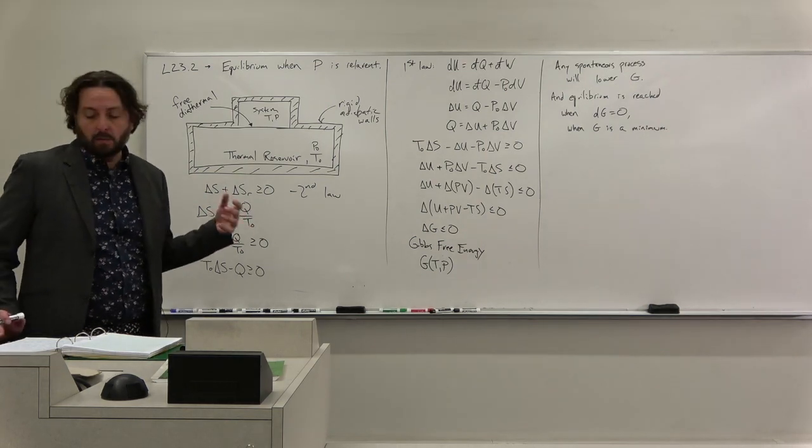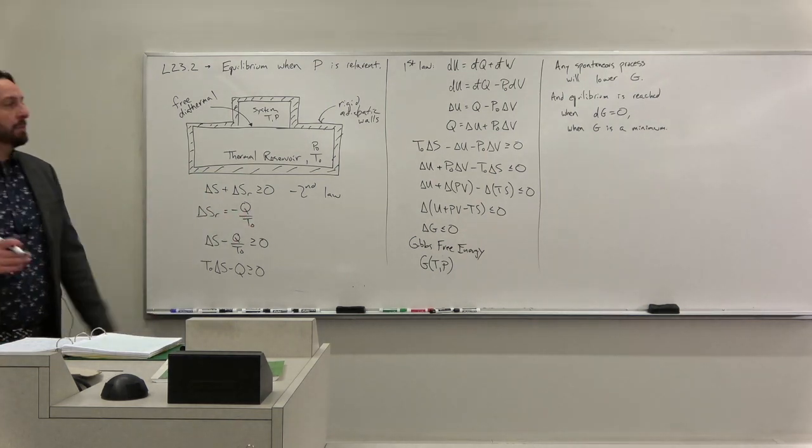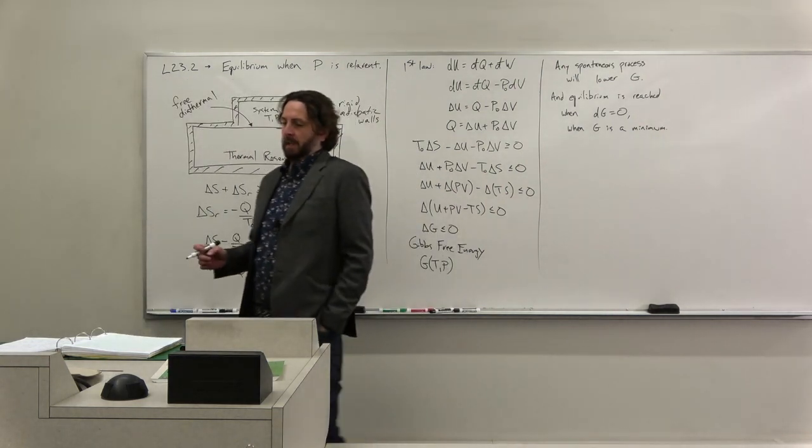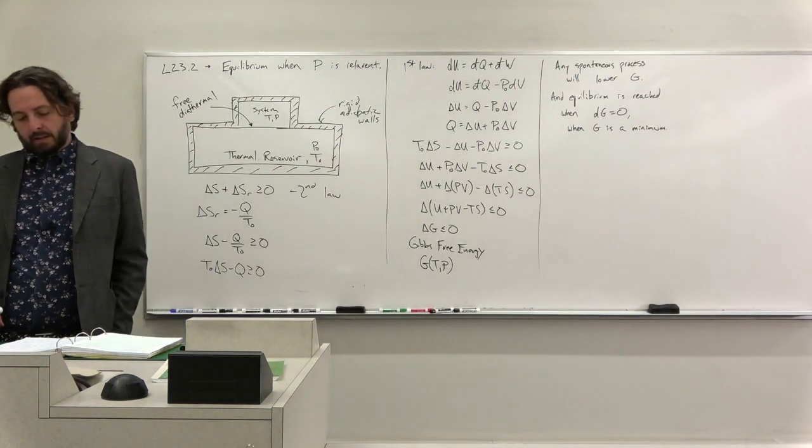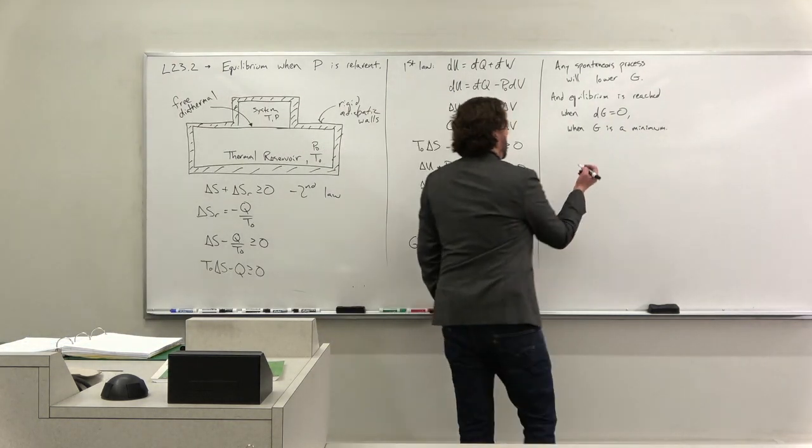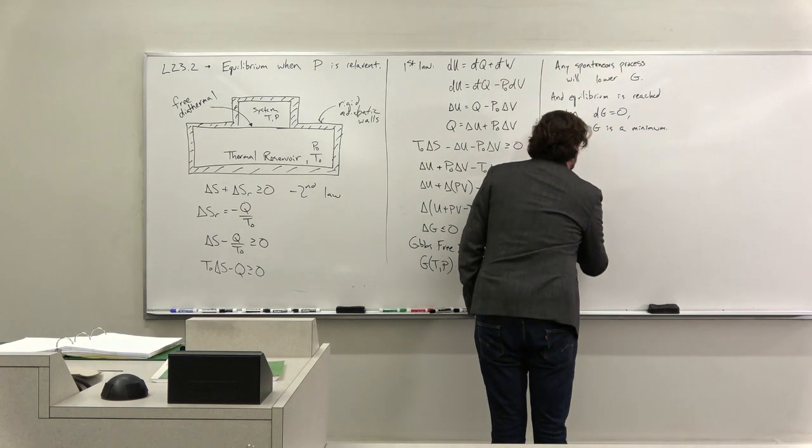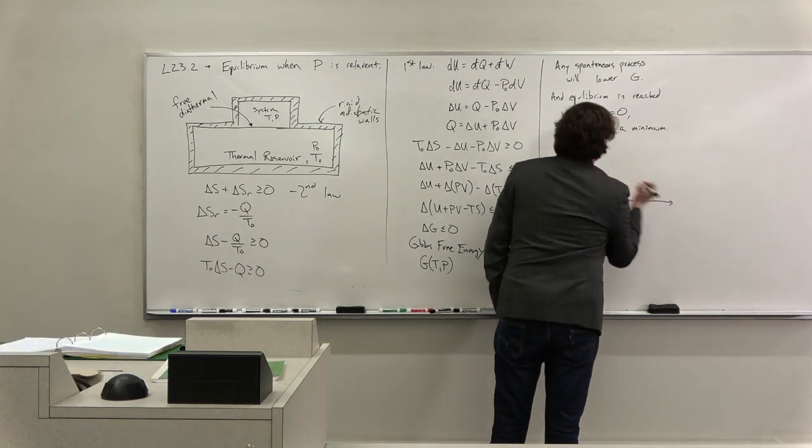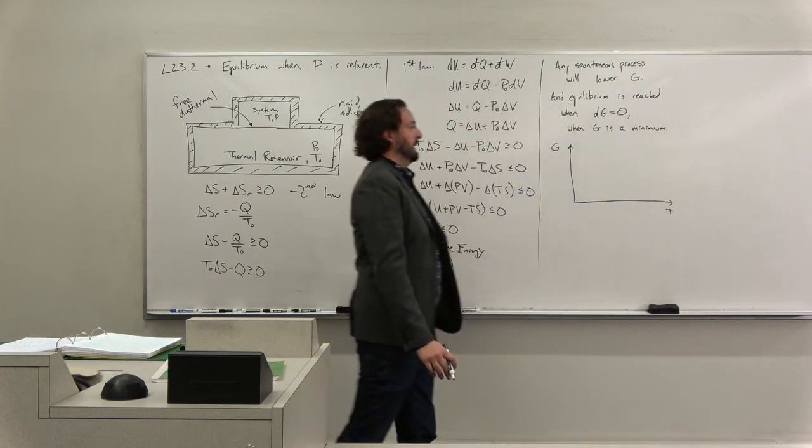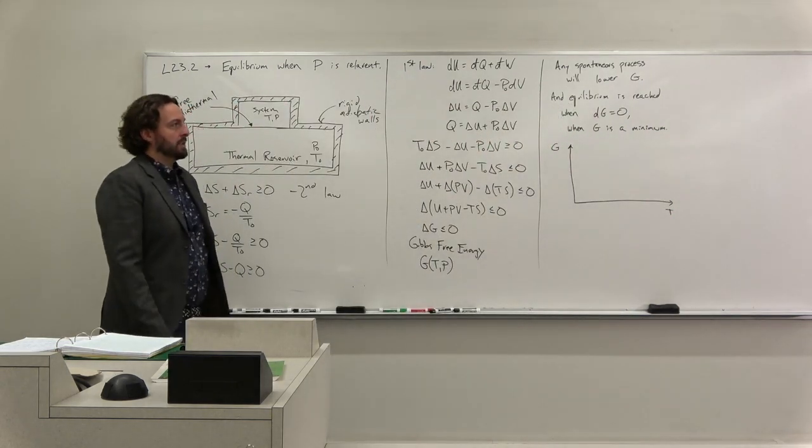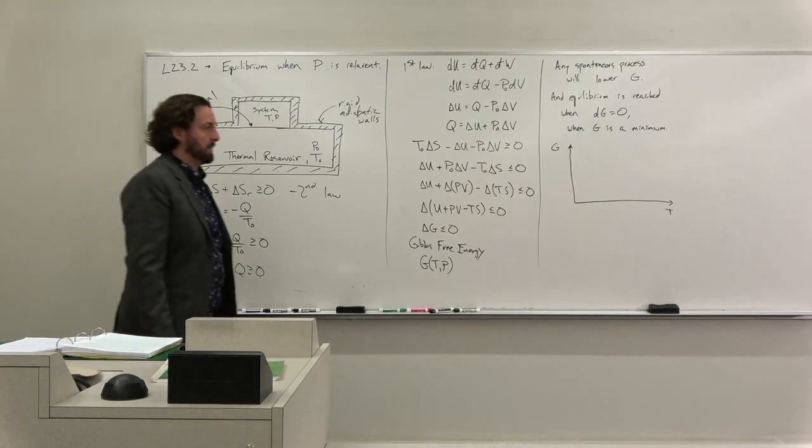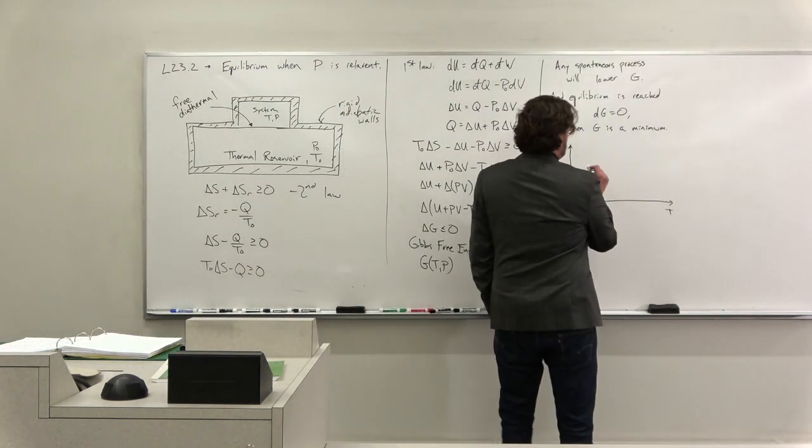So now we know that what the system wants to do is minimize the free energy. So let's look, for example, we're going to use water and ice a lot. So imagine that I plot G versus T. How does the Gibbs free energy change with temperature?